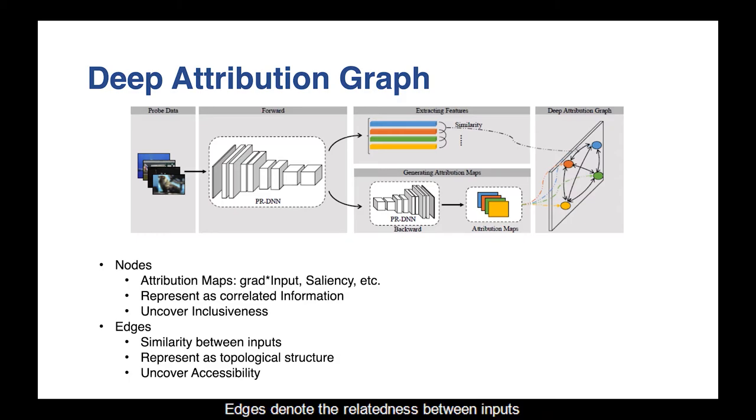Edges denote the relatedness between inputs and are measured by their similarity in the feature space. As the DeepHara of different models or layers are defined on the same set of inputs, they are actually in the same space. Thus, knowledge transferability is directly measured by the similarity of their DeepHara.